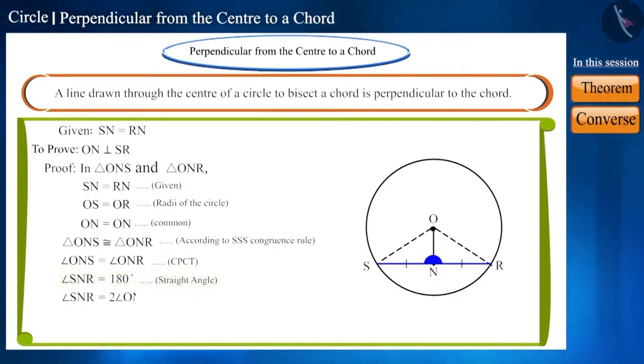And angle SNR is formed by joining both these angles and both are also equal. Therefore, we can say that both these angles are right angles, that is, of 90 degrees. Therefore, the segment ON will be perpendicular to chord SR. This statement is true.